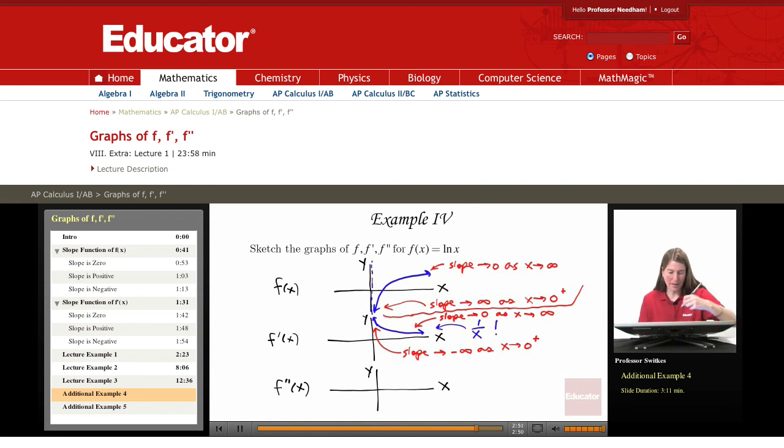So f'' has slope heading towards negative infinity as x heads towards zero from the right. And f'' has to have value heading towards zero as x heads towards infinity.